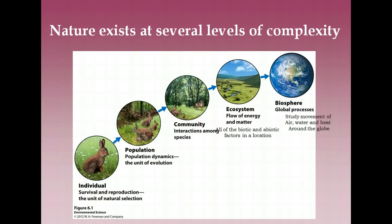Next you have community, which incorporates all the populations interacting together. Next you have ecosystems, which consist of all the biotic and abiotic components in a particular location. Ecologists will study the flow of energy and matter and the cycling of nutrients like we looked at in Chapter 3. And then the largest and most complex is the biosphere, which incorporates all of the Earth's ecosystems. Scientists who study the biosphere are interested in the movement of water, air, and heat around the globe.